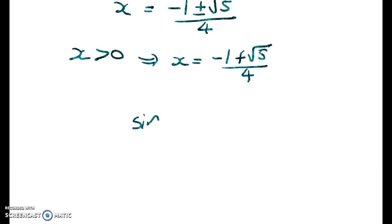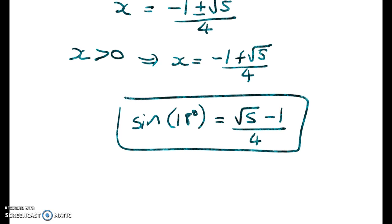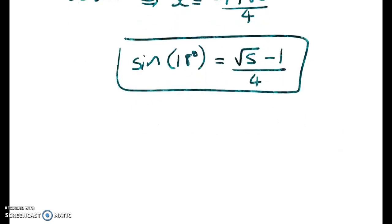We're kind of happy because we've now found an exact expression for sine of 18 degrees, and it's this: root 5 minus 1 over 4. So we've got that, but we don't want that. We want the cosine of 18 degrees. Two ways to go here. We can use cos squared x plus sine squared x equals 1, or we can do my favorite, which is to chuck it into a triangle and see what's going on.